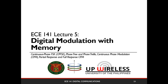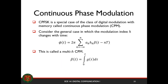We're only going to consider the rational case. How do we add memory in our continuous phase frequency shift keying? That's our continuous phase modulation, and CPFSK is a special case of that. Collectively, our continuous phase modulation has a phase function where beta is the integral of any pulse g of t.